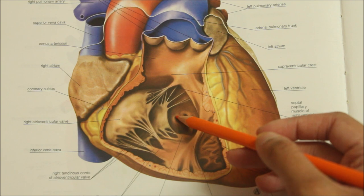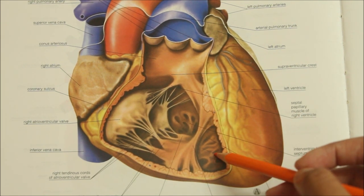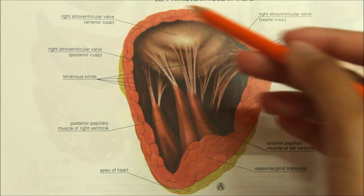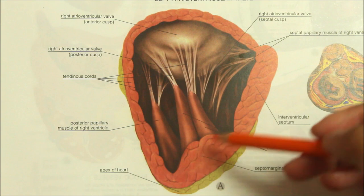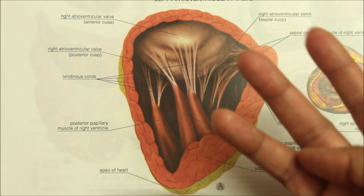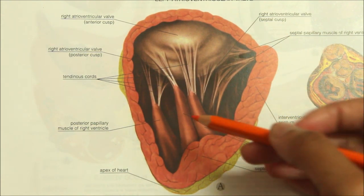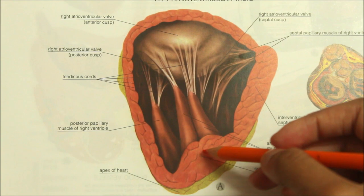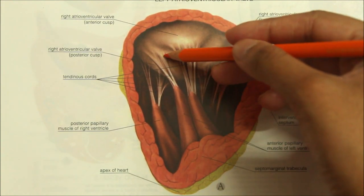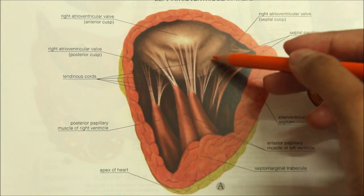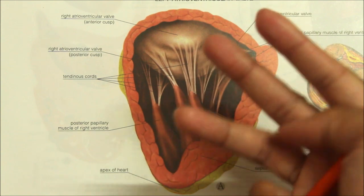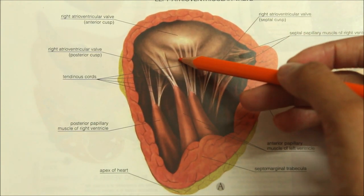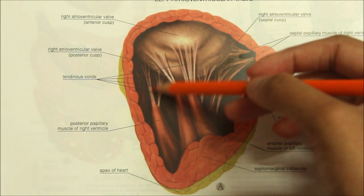The interior of the inflowing part shows trabeculae carnie, or muscular ridges, of three types: ridges, bridges, and pillars or papillary muscles. The papillary muscles have one end attached to the ventricular wall and the other end attached to the cusps of the tricuspid valve — tri meaning three cusps — via the chordae tendineae, which are the tendinous cords.